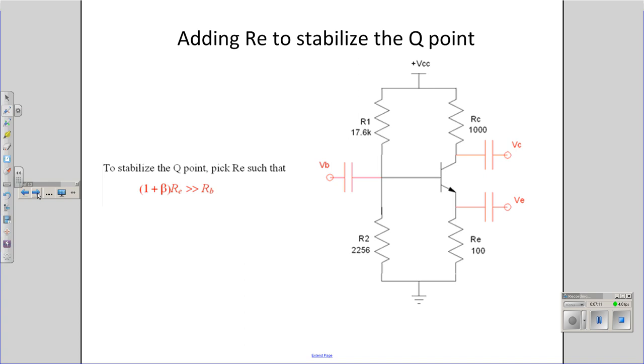It turns out, if you look in your textbook or the lecture notes, if I throw in the emitter resistor and I pick it so that 1 plus beta RE is much, much bigger than RB, where RB is your Thevenin equivalent of R1 and R2, my Q point is almost constant in spite of variations in beta.